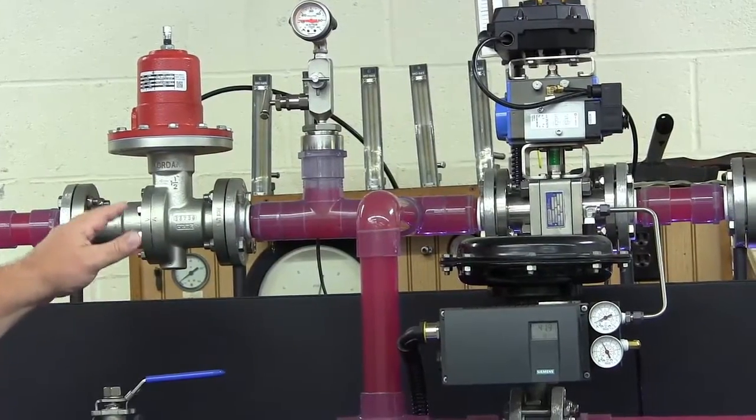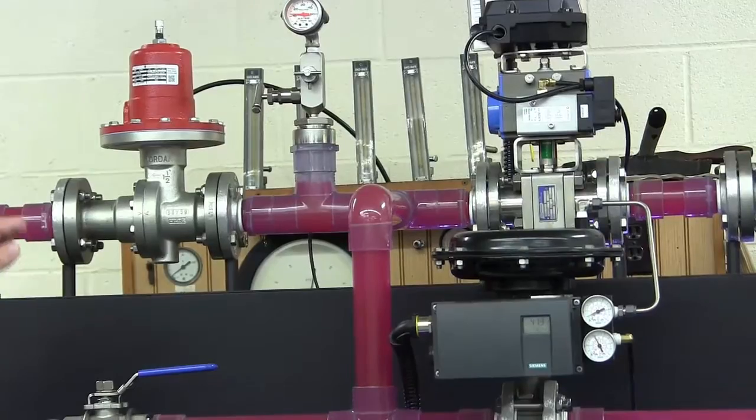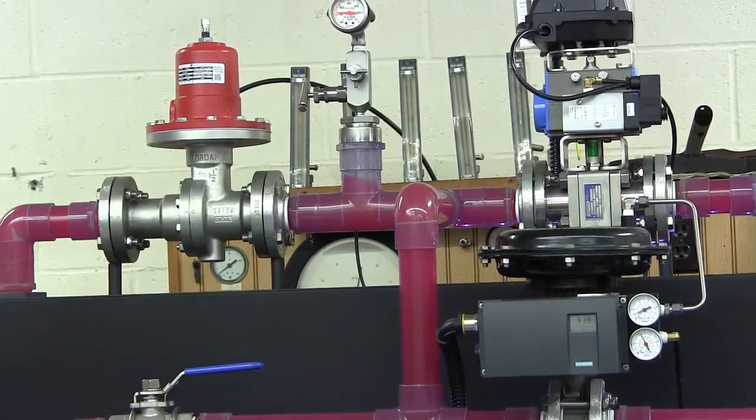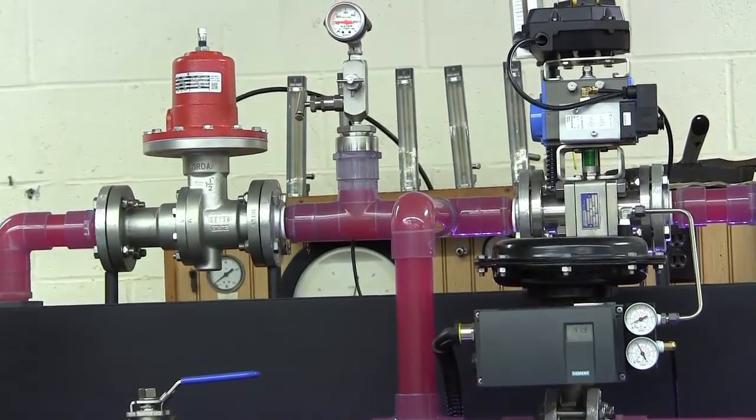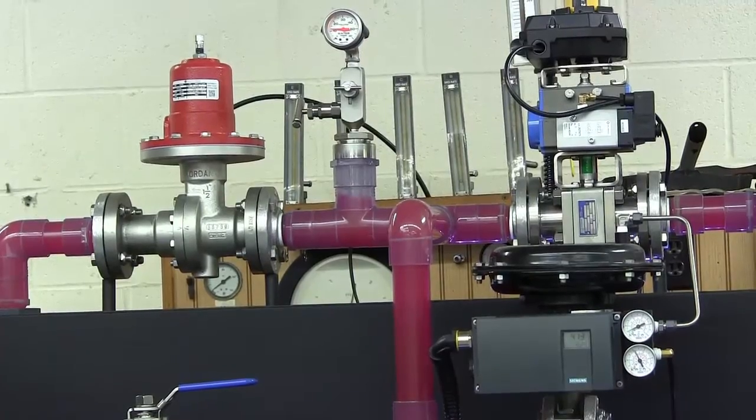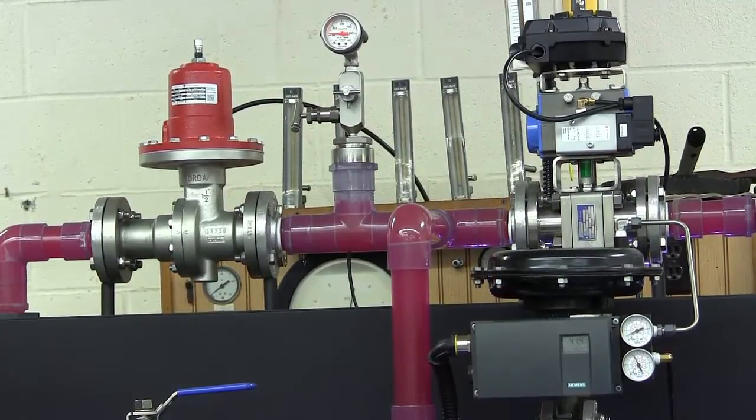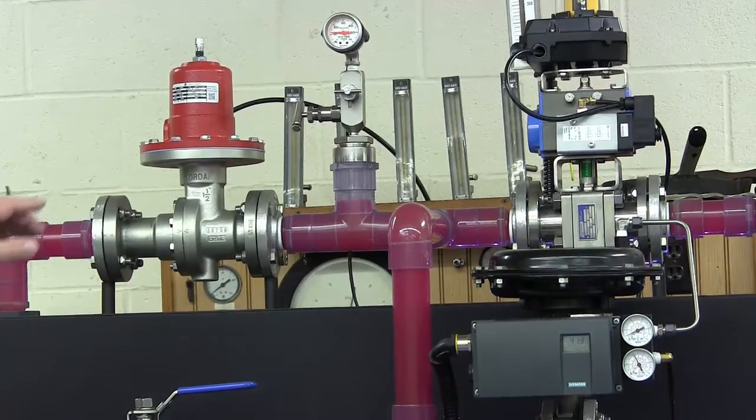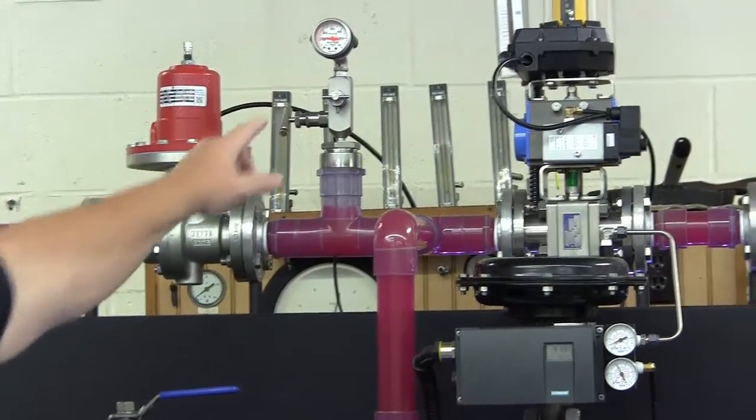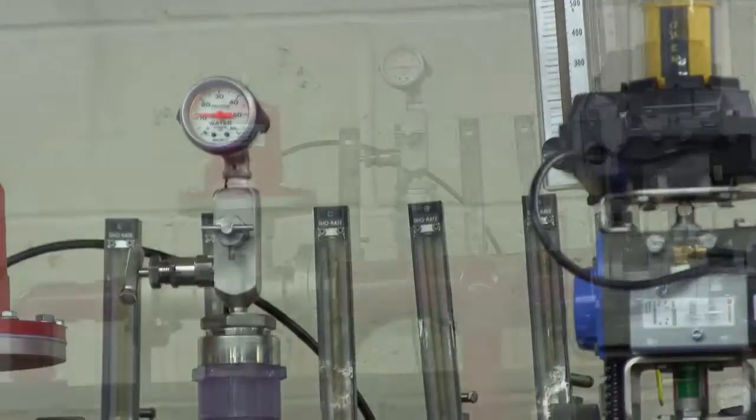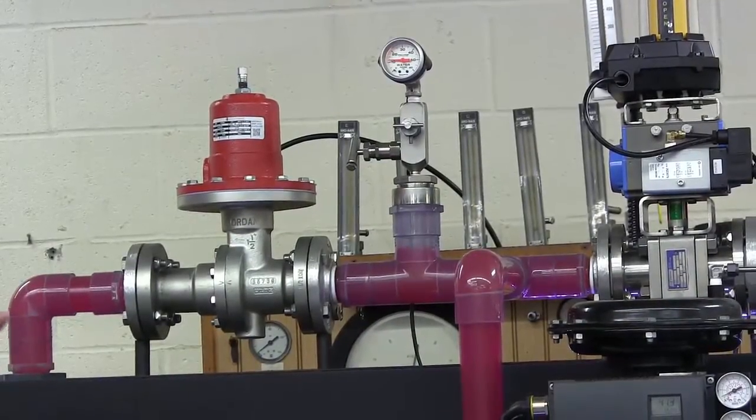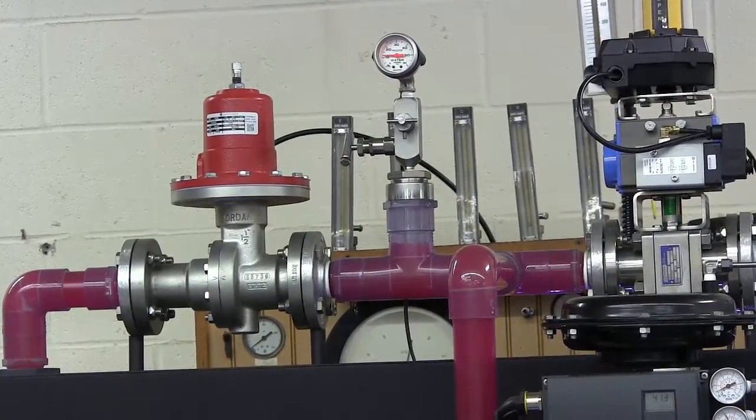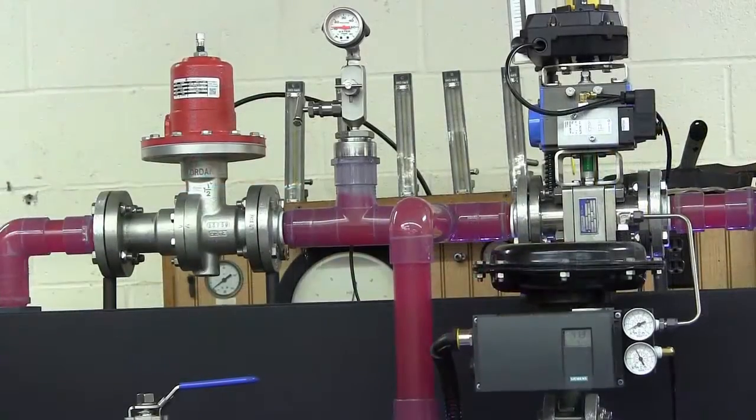Like the mark 75, the mark 50 also employs Jordan sliding gate seat technology. The mark 50 is a self-operated back pressure regulating valve. The range spring holds the seat in the closed position. When the upstream pressure reaches the valve set point, in this case 10 psig, the pressure under the diaphragm will compress the spring, opening the valve and relieving the pressure.